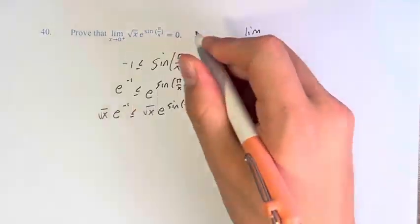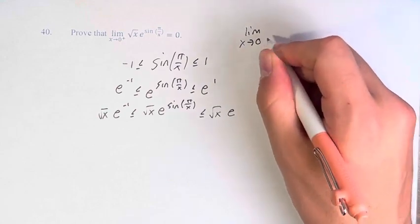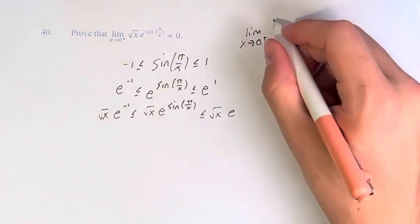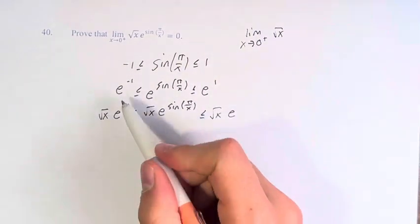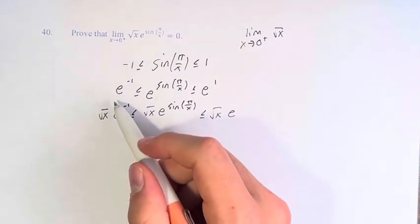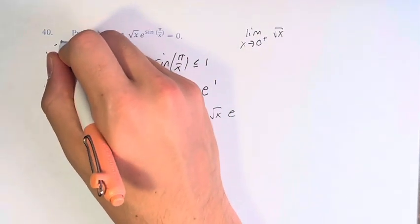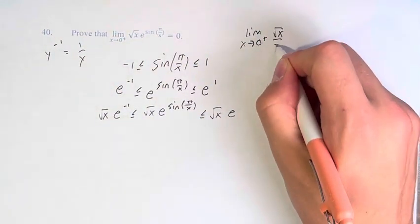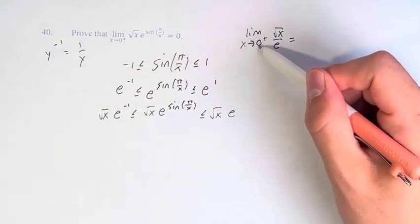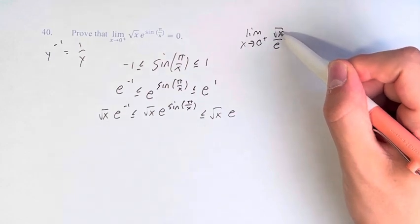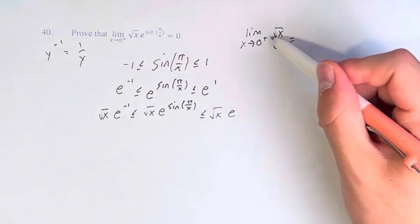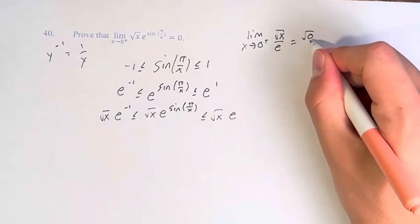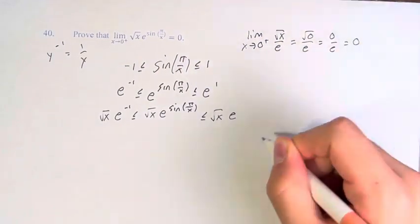Therefore, we're looking for the limit as x approaches 0 from the right of the square root of x times e to the negative 1. Anything to the negative 1 is just 1 over that thing, so this is 1 over e — the square root of x over e. We can just plug in 0 from the right, so we don't have to worry about taking the square root of a negative number. This gives the square root of 0 over e, which is 0 over e, which is 0.